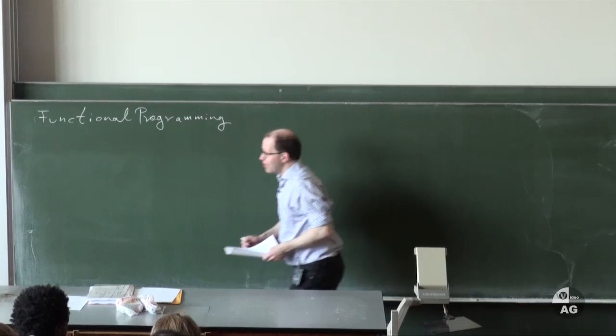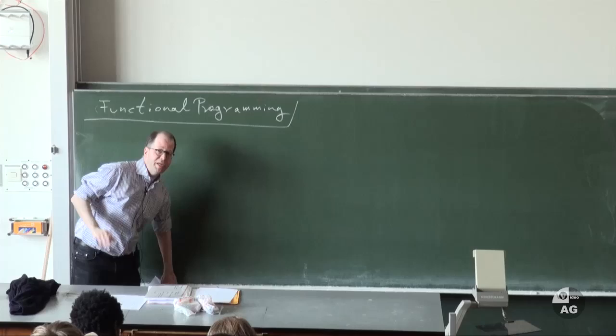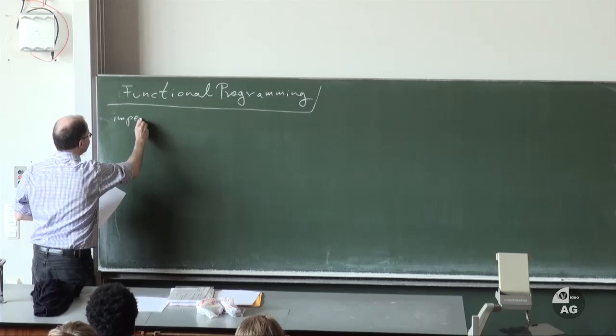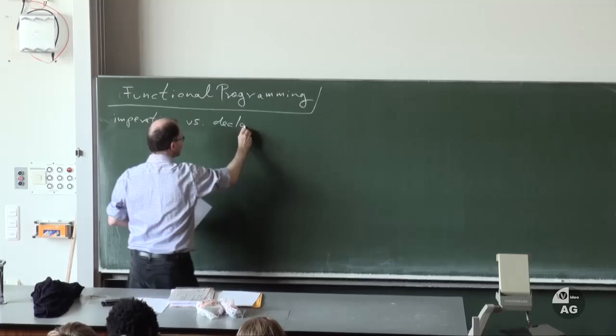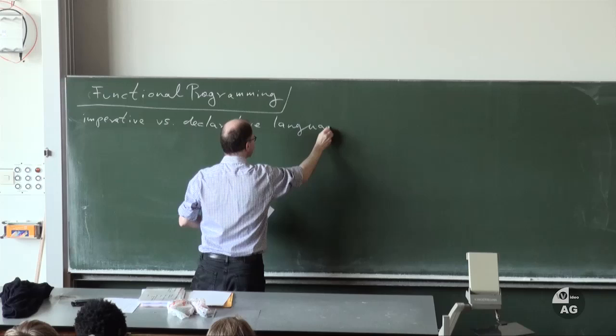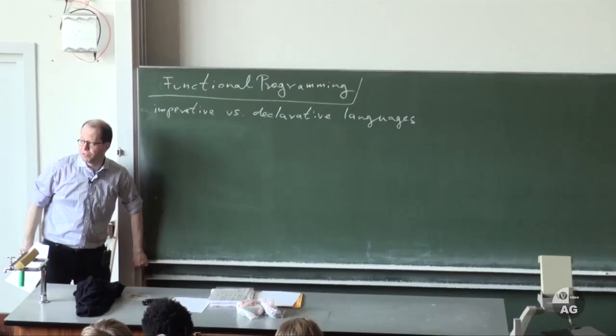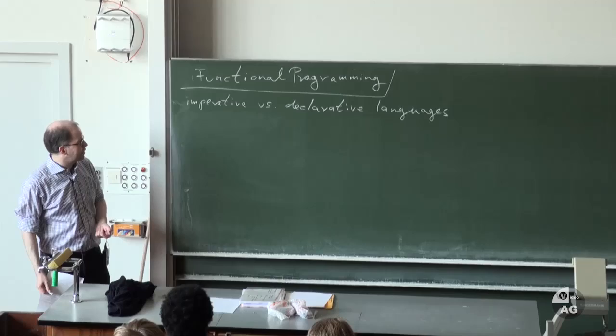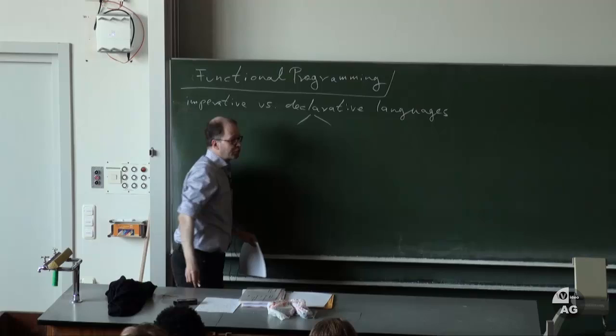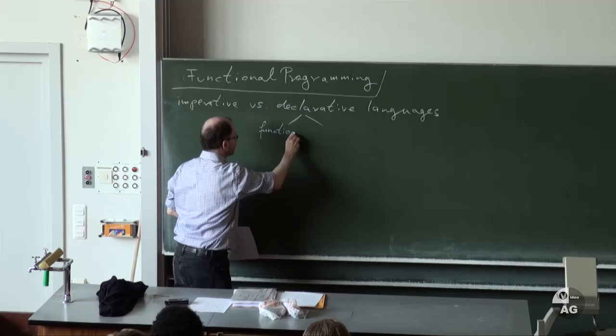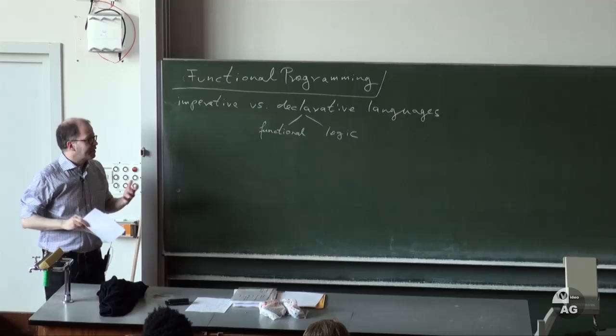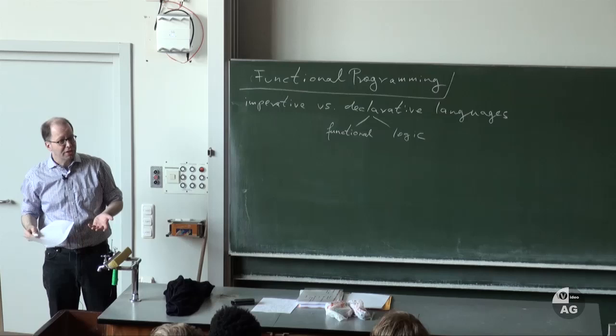In principle there are two big families of programming languages, namely the imperative languages versus the declarative programming languages. Imperative languages are the languages that you are probably most used to, and examples are languages like C, Java and whatever. And declarative languages, there are two big groups: namely functional and logic programming languages. The essential idea is that these languages should be much nearer to natural language than to machine language.